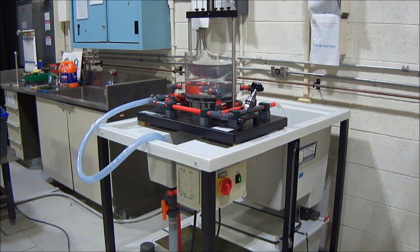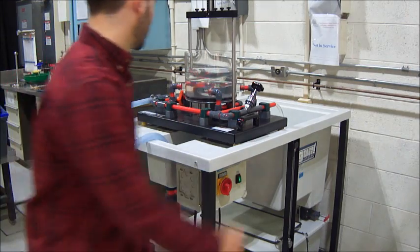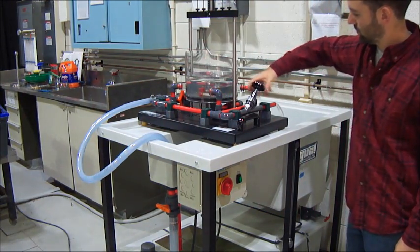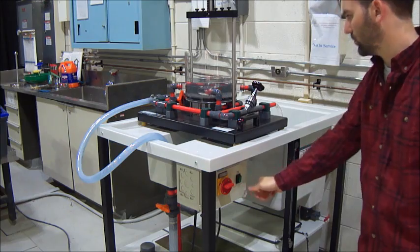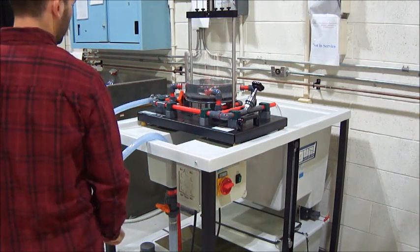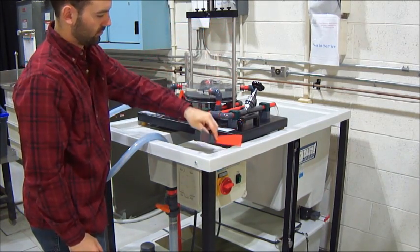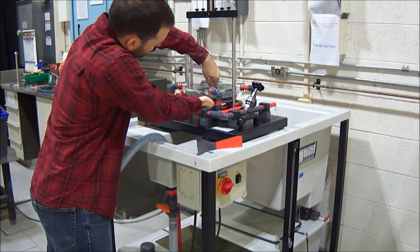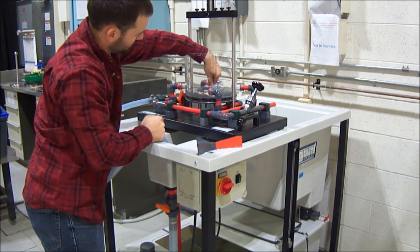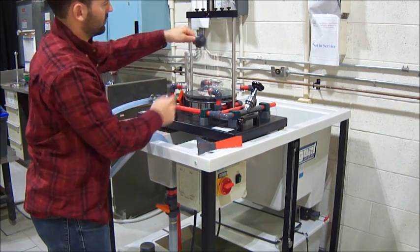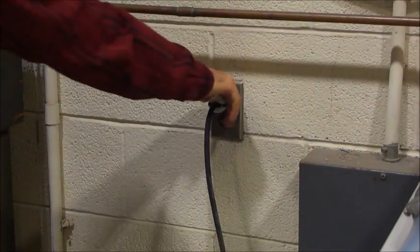Now, to turn off the apparatus, rotate the selector valve to the closed vertical position. Close the gate valve. Open the overflow valve completely. Turn off the pump and turn off the switch. Then remove the impeller. And now the plug in order to allow the vessel to drain. Lastly, unplug the apparatus from the power source.